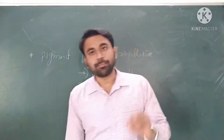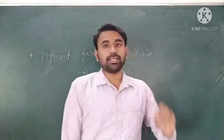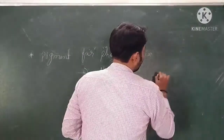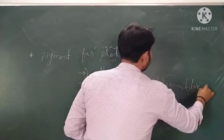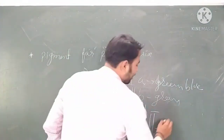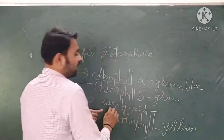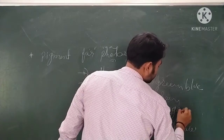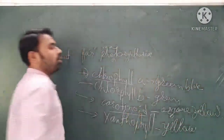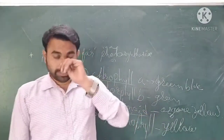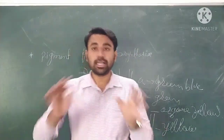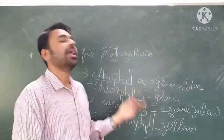These pigments have different colors. Chlorophyll A is greenish blue, chlorophyll B is green, xanthophyll is yellow, and carotenoid is orange-yellow. Chlorophyll A and chlorophyll B are the major pigments and are present in large amounts in leaves. That is why leaves appear green — because of chlorophyll A and chlorophyll B.